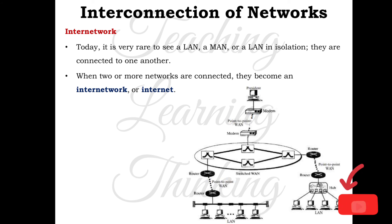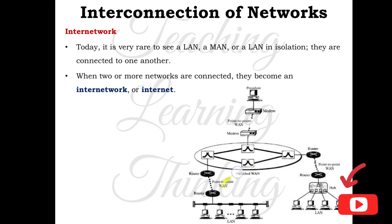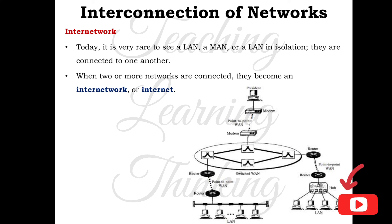The next topic is the interconnection of networks. Today it is very rare to see a LAN, MAN, or WAN in isolation — they are connected to one another. When two or more networks are connected, they become an internetwork, or internet. The figure shows the interconnection of these networks: LAN, MAN, WAN, etc. This interconnection of networks — LAN, MAN, WAN and others — is called an internetwork, or internet.